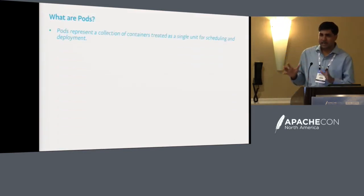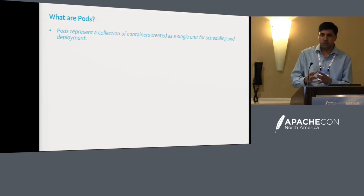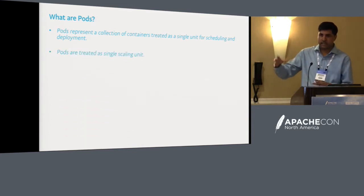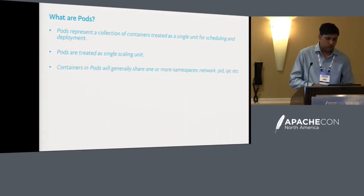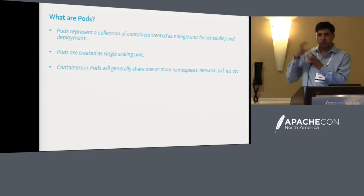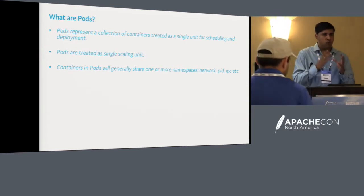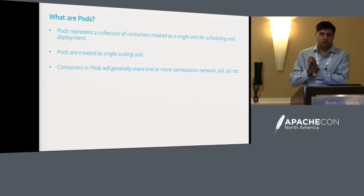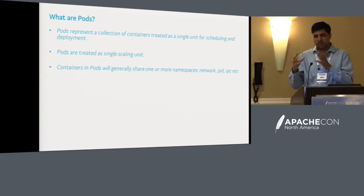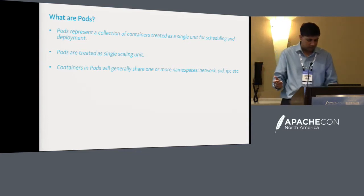What exactly are pods? Loosely, pods are a collection of Docker containers bundled together and scheduled and deployed as a unit — treated as a single scaling unit, where every instance is a collection of these containers. Two important things: all the containers in the unit will most likely share namespaces. Network namespace is the most common — one container has the primary network interface and IP, and the rest collapse to use that same interface and IP. You can also collapse PID or IPC namespaces, but network is the most common.